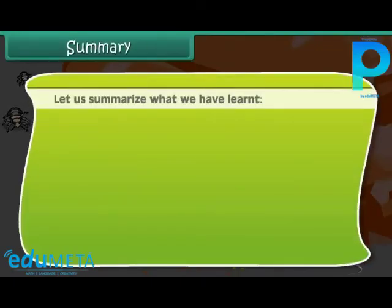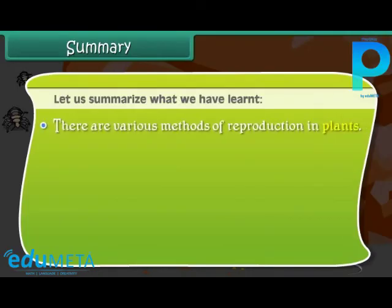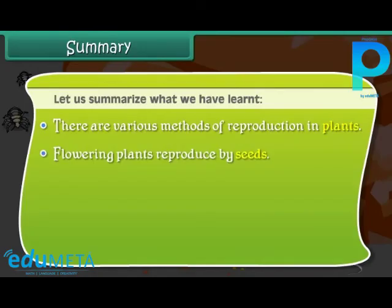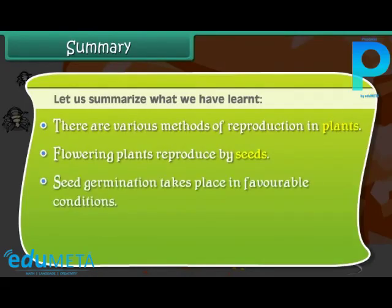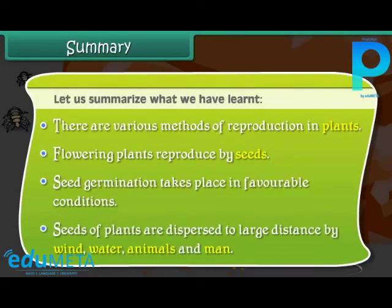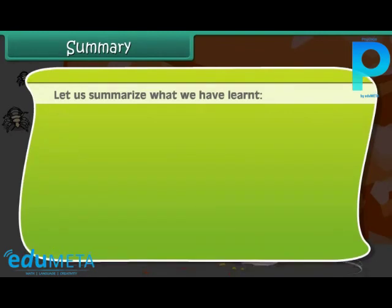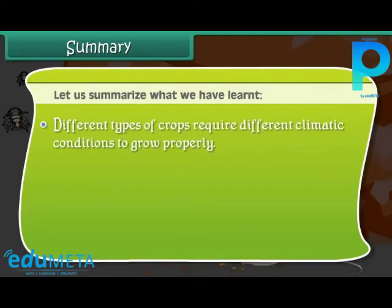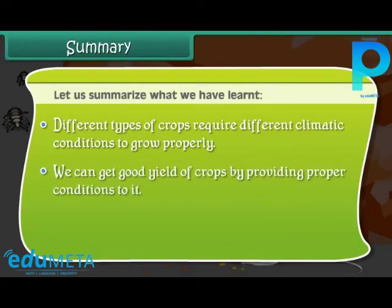Summary: There are various methods of reproduction in plants. Flowering plants reproduce by seeds. Seed germination takes place in favorable conditions. Seeds of plants are dispersed to large distances by wind, water, animals, and man. Different types of crops require different climatic conditions to grow properly. We can get good yield of crops by providing proper conditions and protecting them well.